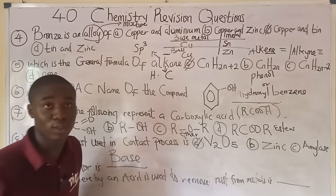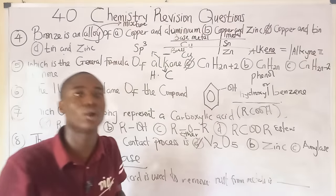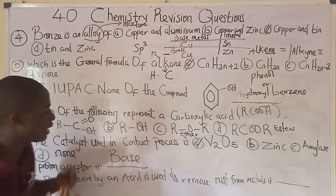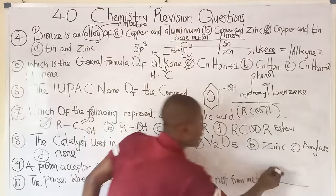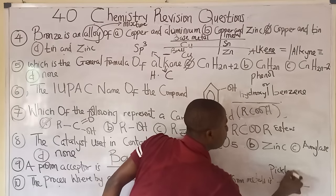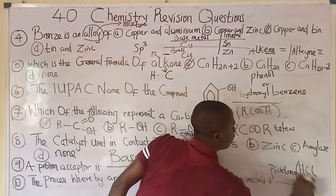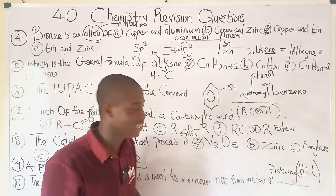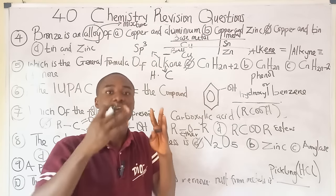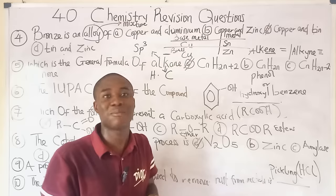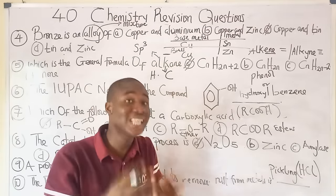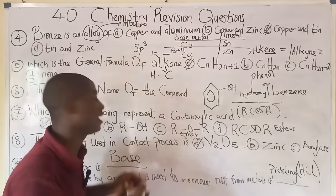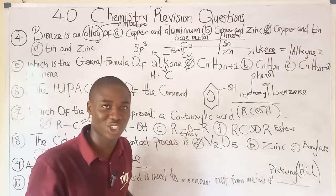Question ten: the process whereby an acid is used to remove rust from metals is called pickling. The popular acid used for this function is HCl, called hydrochloric acid. If you are new to this channel and haven't subscribed yet, please click the subscribe button and share these lessons with your friends.